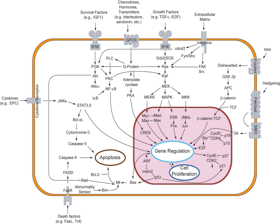Signaling molecules binding surface receptors are generally large and hydrophilic (e.g., TRH, vasopressin, acetylcholine), while those entering the cell are generally small and hydrophobic (e.g., glucocorticoids, thyroid hormones, cholecalciferol, retinoic acid), but important exceptions to both are numerous, and a same molecule can act both via surface receptor or in an intracrine manner to different effects.